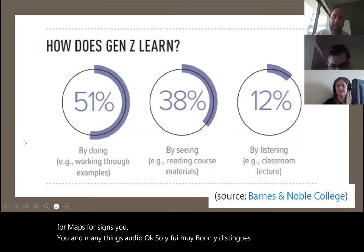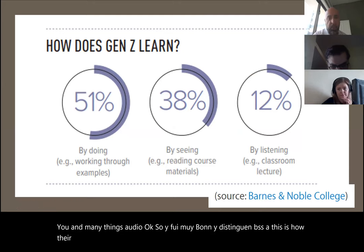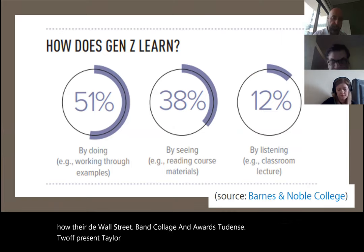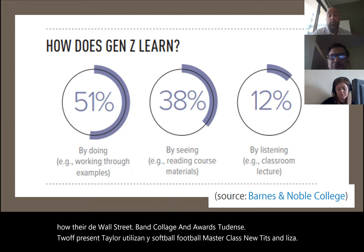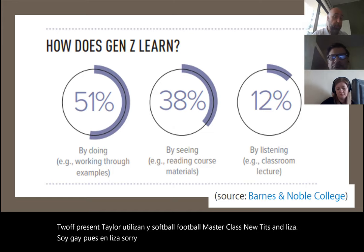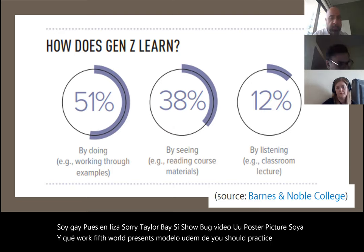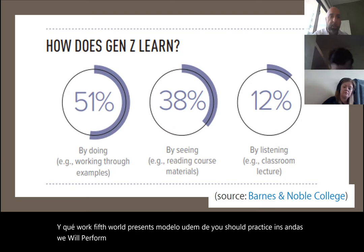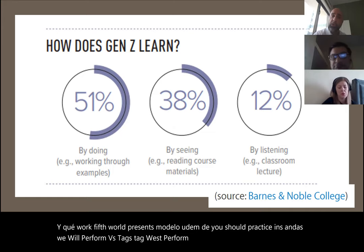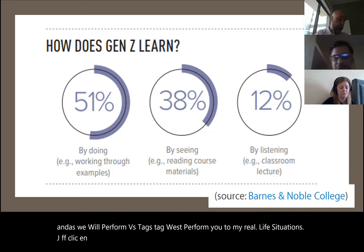There was a study done by Barnes and Noble College on how Generation Z students learn. 12 percent learn only by listening — so forget about the master class where you lecture. 38 percent learn by seeing — with books, videos, posters, pictures. And 51 percent, more than half, learn by doing — practicing things. That's why when we talk about performance-based tasks, those are tasks that ask students to perform, do something, and make a link with real-life situations.